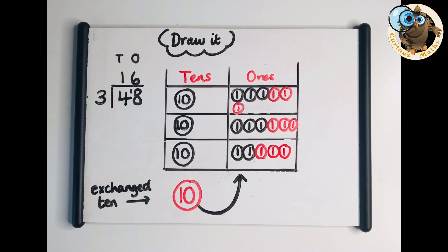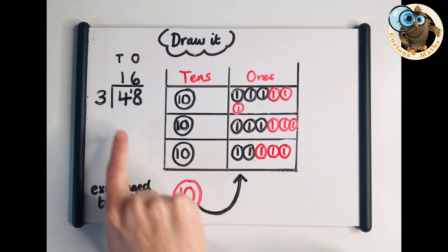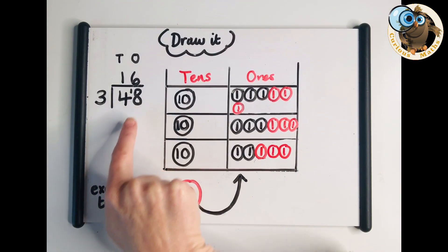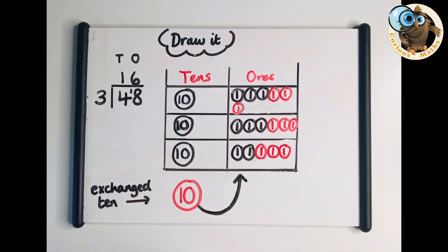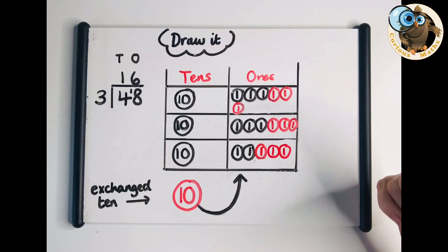This is an example of what the draw it might look like for 48 divided by 3. Some children may benefit from drawing out the 48 first and recognising we've got four tens and eight ones. If they need to do that, they can cross it off as they go along once they put it into the grid. Some children really do benefit from that but for others it makes it a really long process.